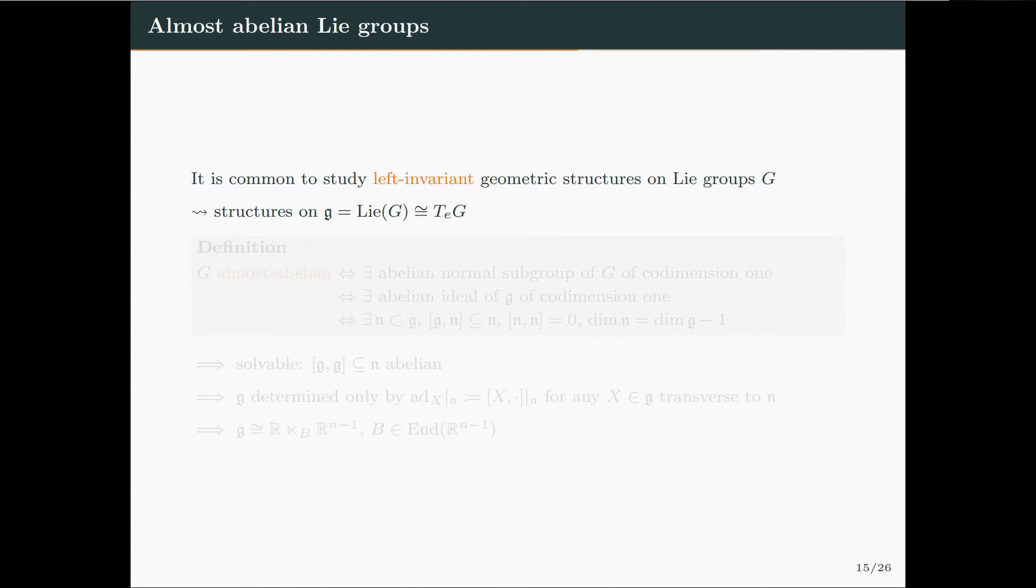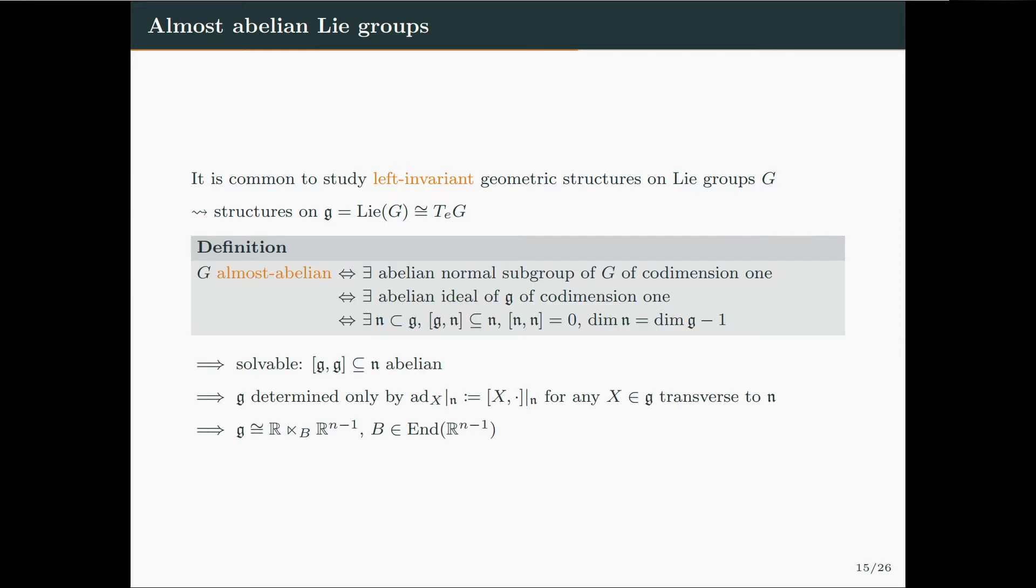First of all, and this is the case for all Lie groups, not just almost abelian Lie groups, one usually studies left-invariant geometric structures on Lie groups, so structures which are invariant under left translations. This implies that the structure descends to a structure on the Lie algebra of the group, and this makes the problem easier to study. We said that the Lie group is almost abelian if it admits an abelian normal subgroup of codimension one, or equivalently if its Lie algebra admits an abelian ideal of codimension one.